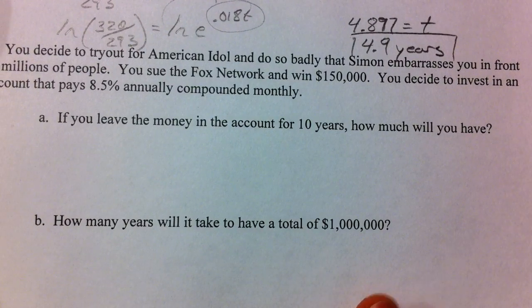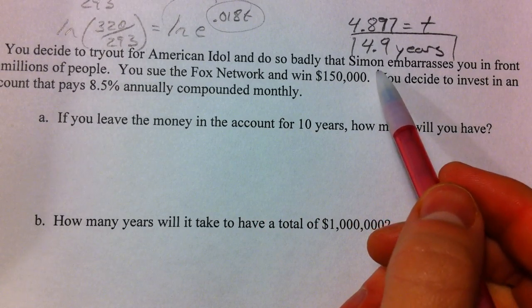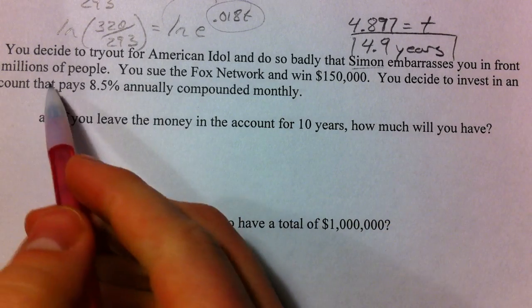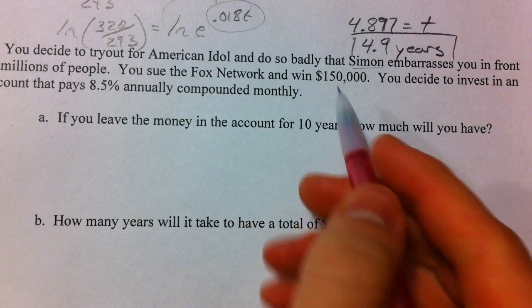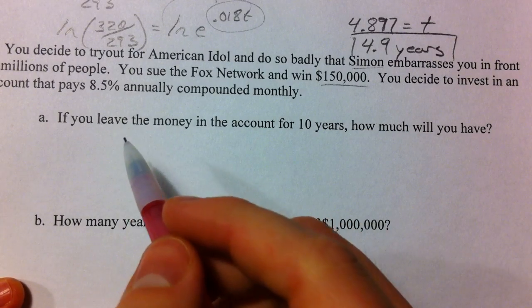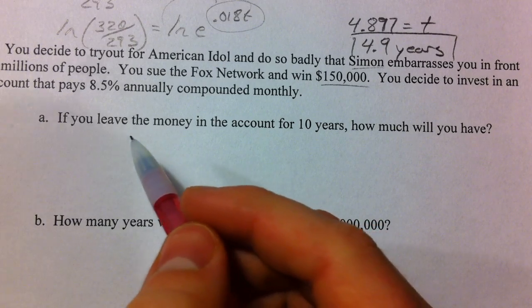So last problem. You decide to try out for American Idol and do so badly that Simon, old question because Simon's no longer on there but he embarrasses you in front of millions of people so you sue Fox you win $150,000 and decide to invest it because you're smart you're wise and you know that you don't need $150,000 right now.